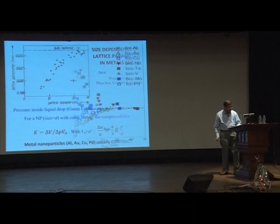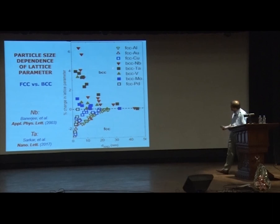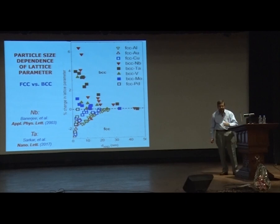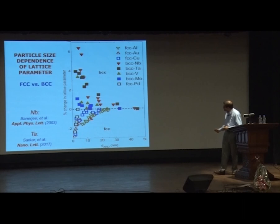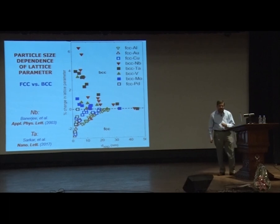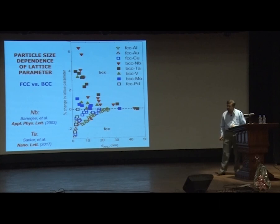This does not happen in metallic nanoparticles because they don't have dangling bonds on the surface. In a metal, the predominant interaction is something like surface tension, which will tend to contract the metallic particle — so as you go down in particle size, you decrease the lattice parameter. If you plot all the data for different metals like aluminium, copper, niobium, tantalum, palladium, most show a decrease because of surface energy. But recently we found cases where there is an expansion in the unit cell volume — this happens almost always in BCC metals. FCC metals contract, BCC metals expand as you go down in particle size.